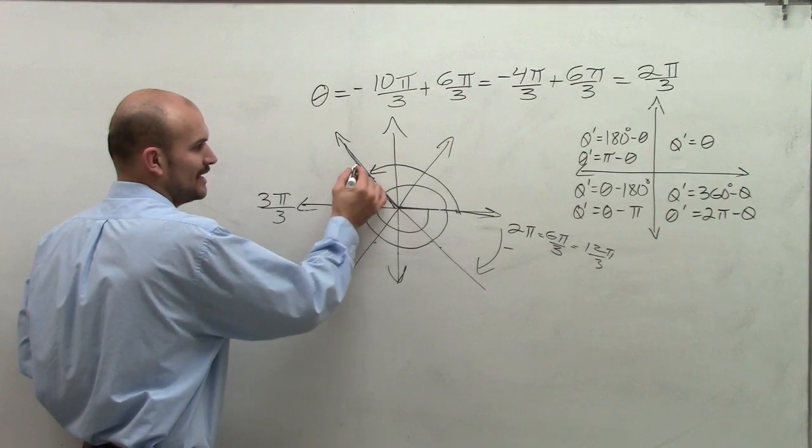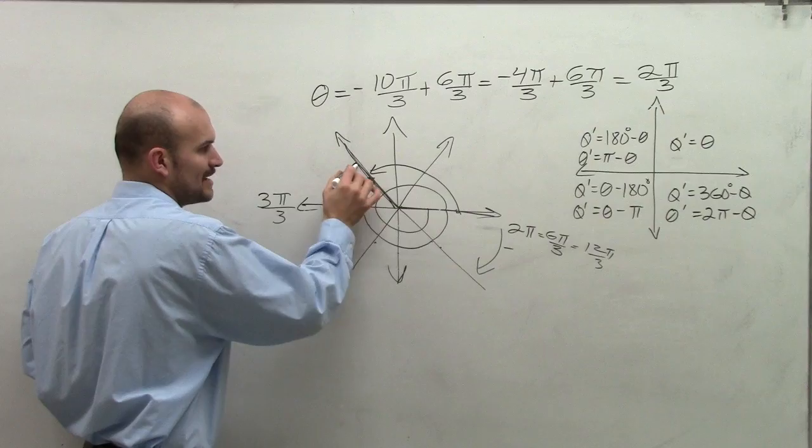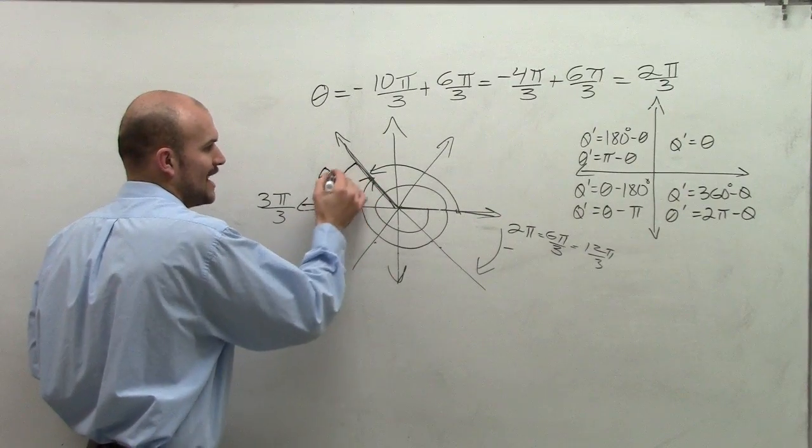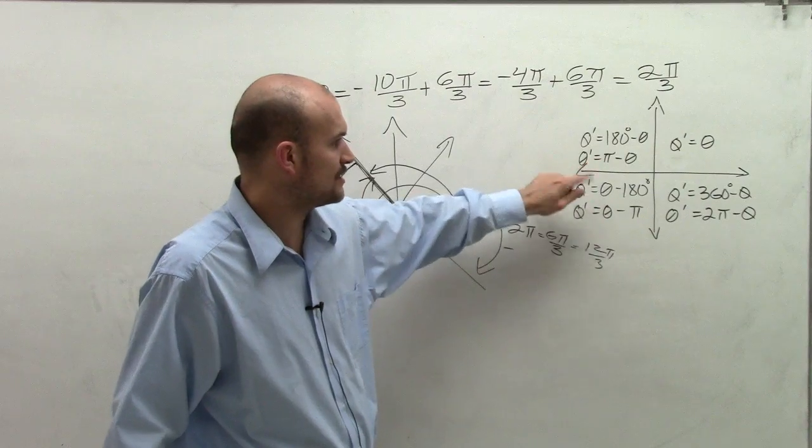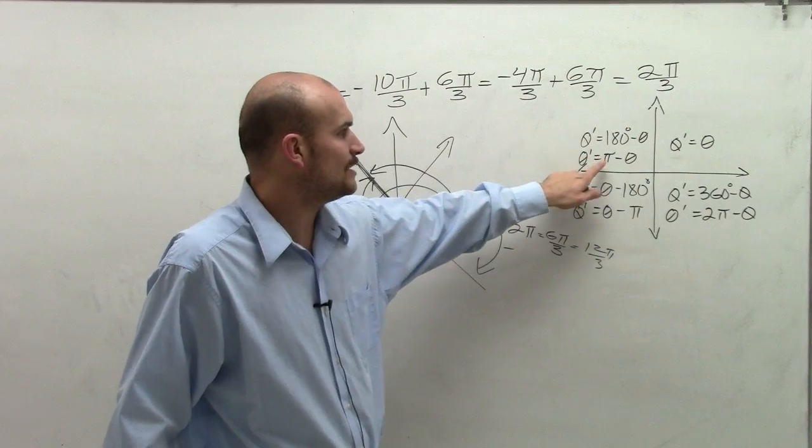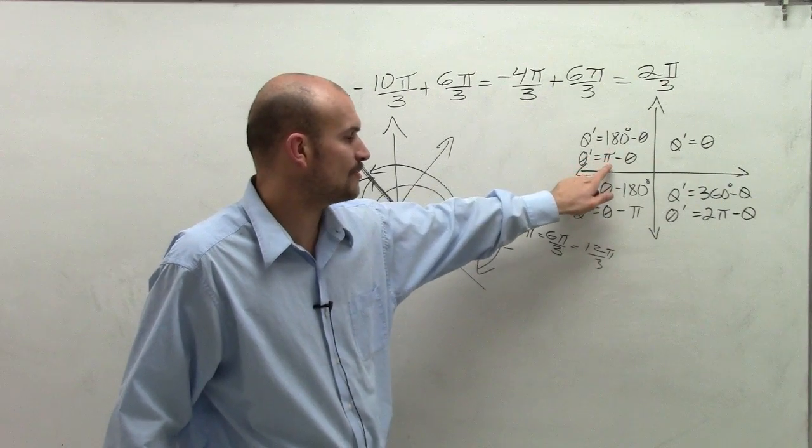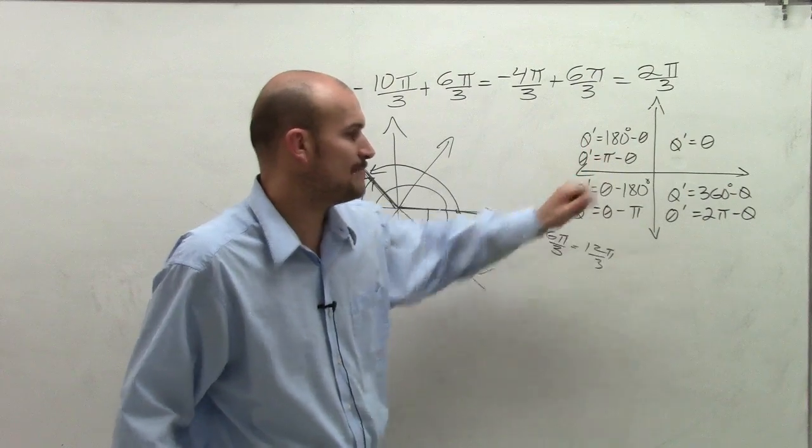The reference angle, remember, is the acute angle from my terminal side to my horizontal axis. So to find the reference angle in the second quadrant, I'm going to take theta prime equals pi minus theta.